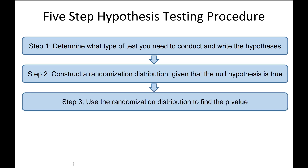Step 3 is to use the randomization distribution to find the p-value. The p-value is the area of your randomization distribution that is more extreme than the observed sample statistic in the direction of the alternative hypothesis.